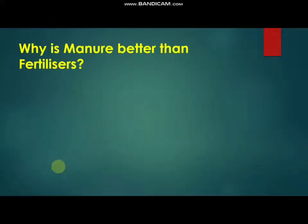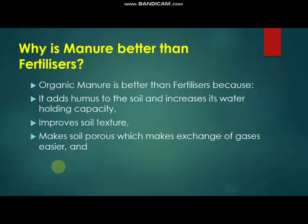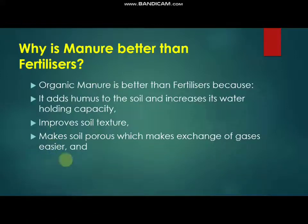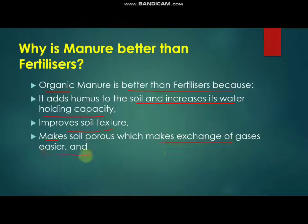Why is manure better than fertilizer? Excessive use of fertilizer decreases crop production and generates adverse effects on soil health. Organic manure is better because it adds humus to the soil and increases its water holding capacity, improves soil texture, makes soil porous which makes exchange of gases easier, and increases the number of friendly microbes. These are the very important benefits of using manure in comparison to fertilizer.